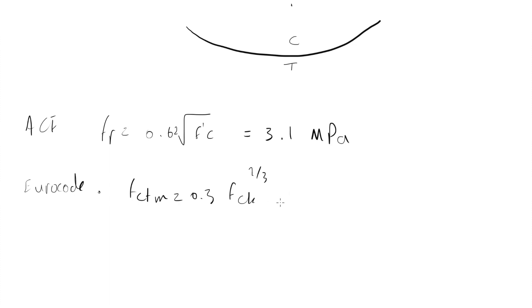FCK is, again, the compressive strength of the concrete and similar to F prime C. And this gives 2.56 megapascal.